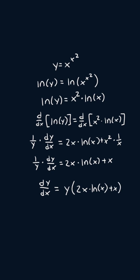Now we can plug back in y equals x to the power x squared. So we get dy/dx equals x to the power x squared times two x times the natural log of x plus x.